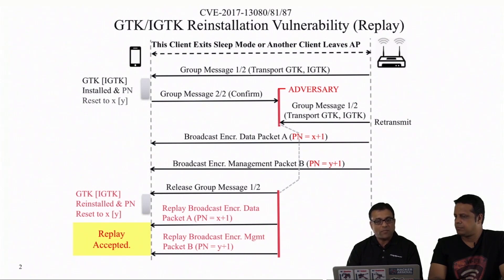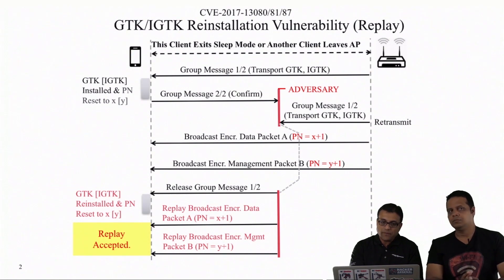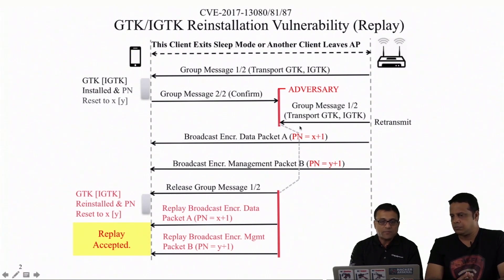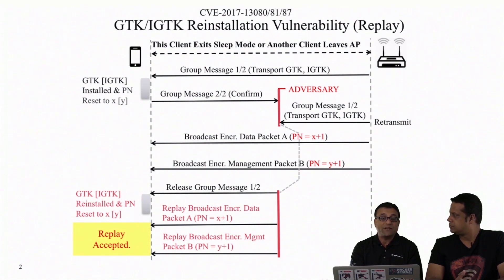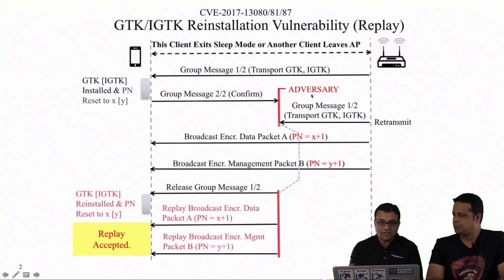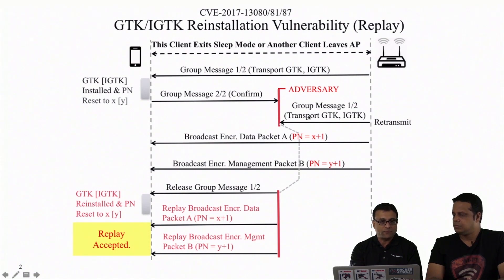Some smarter implementations, when retransmitting message one of two, will send an updated sequence number reflecting the most recently used packet number rather than the original X and Y. To handle this, the attacker can keep blocking and delaying until even that updated number is exceeded. However, other implementations don't update the sequence number at all — they just retransmit with the same sequence number. Both types exist in the wild.